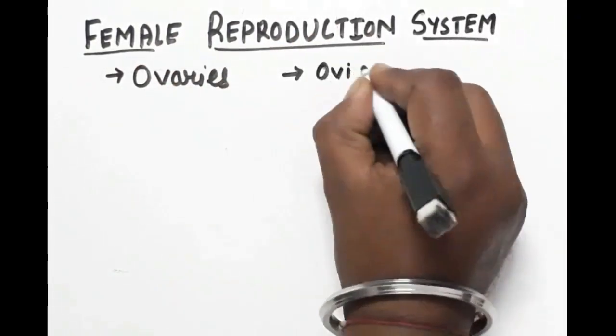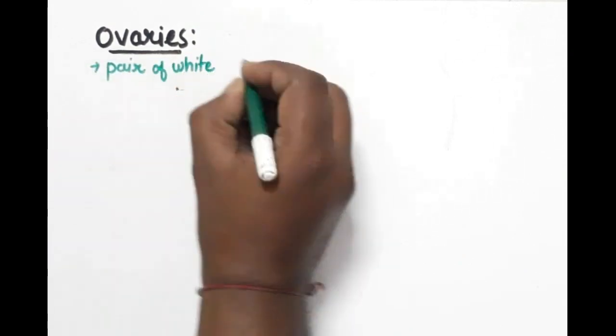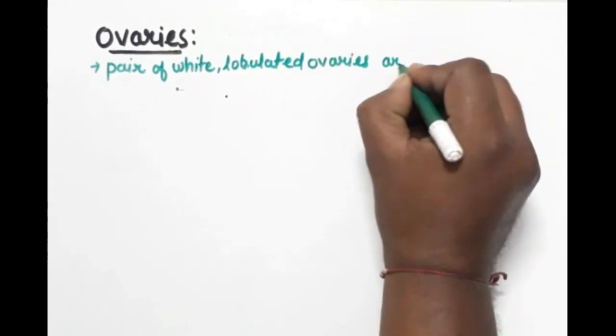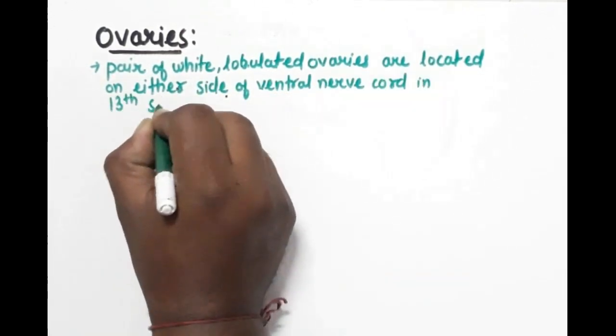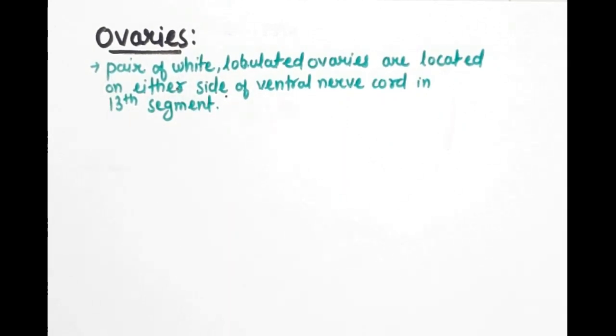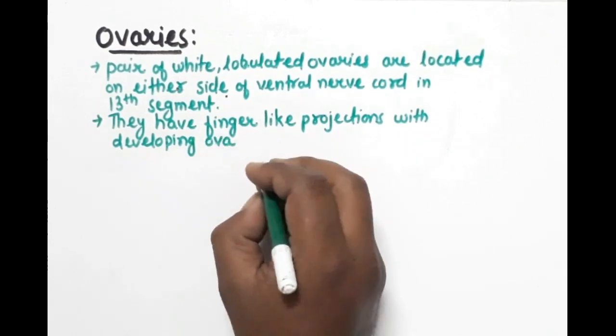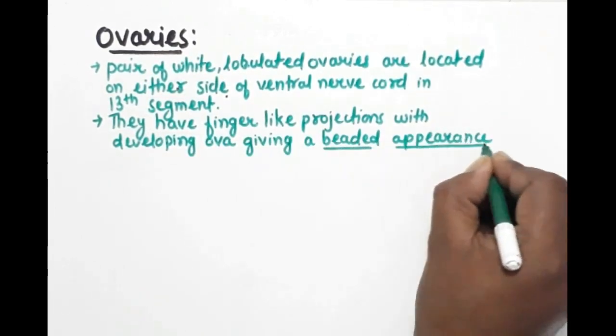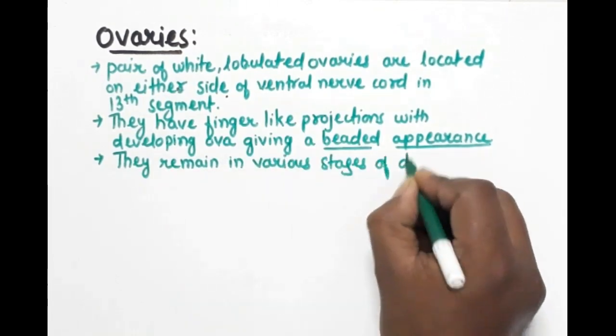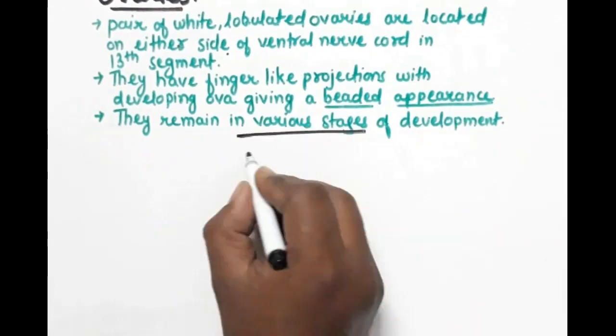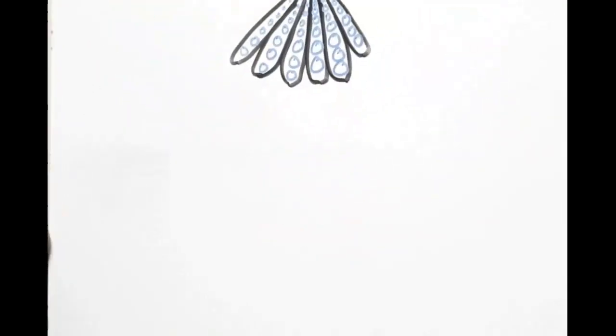Female reproductive system is basically having three main parts: ovaries, oviduct, and spermatheca. Now let's talk about ovaries. Ovaries are in pairs, they are white color and lobulated structure. I can write it as pair of white lobulated ovaries. They are located on either side of ventral nerve cord in thirteenth segment. They have finger-like projections with developing ova giving it a beaded appearance. When you observe them, you will see a lot of developing ova in their structure. They remain in various stages of development.